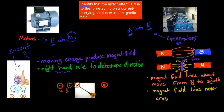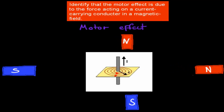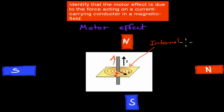Imagine you have your current carrying conductor. As I said, it produces its own magnetic field — we call it the internal magnetic field. It's produced using the right-hand rule, so it goes this way. And it's also perpendicular, which is important. So if we have this being the direction of current flow, this is the direction of its magnetic field, and perpendicular means there's 90 degrees between the two.